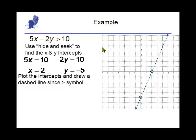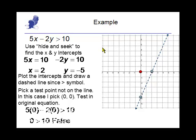Now we have to decide which side to shade. To do that, we're going to use a test point. You need to pick a point that's not on the line. If 0, 0 is not on the line, that's going to be the easiest point to calculate with.